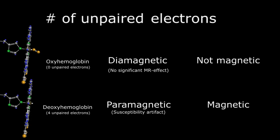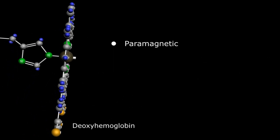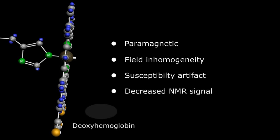With four unpaired electrons, the molecule is now paramagnetic. The high concentration of the paramagnetic deoxyhemoglobin in the regional blood cells causes field inhomogeneity and susceptibility artifact from the rapidly defasing protons which decreases the local NMR signal.